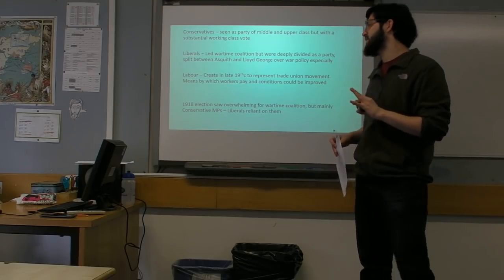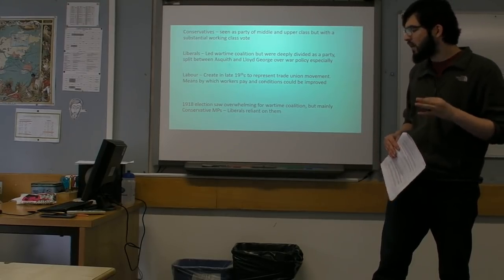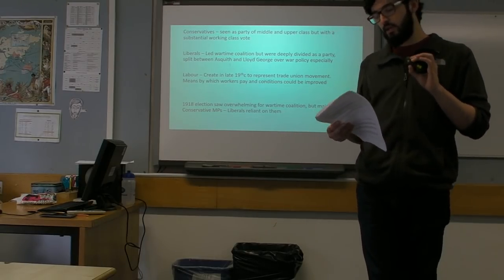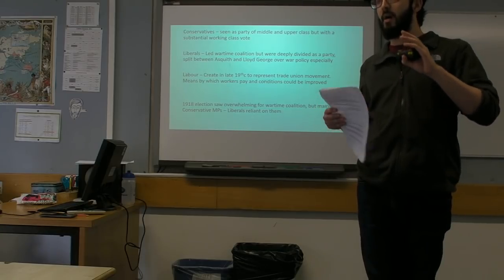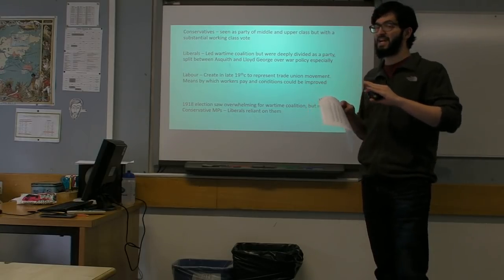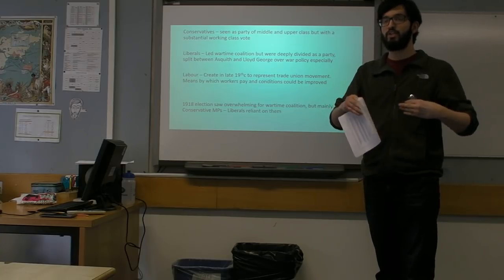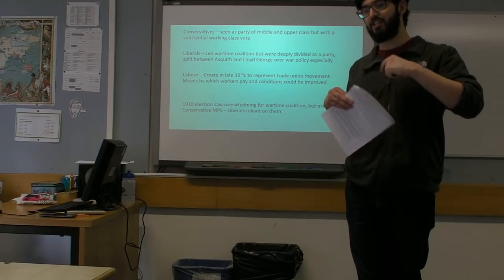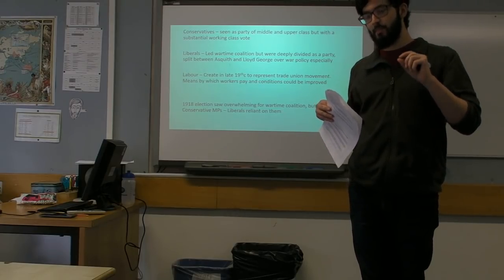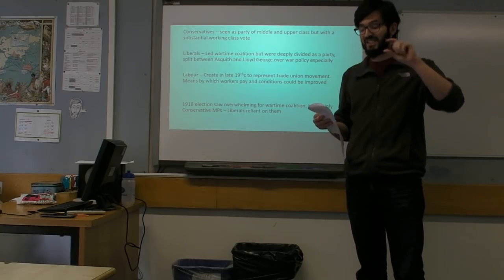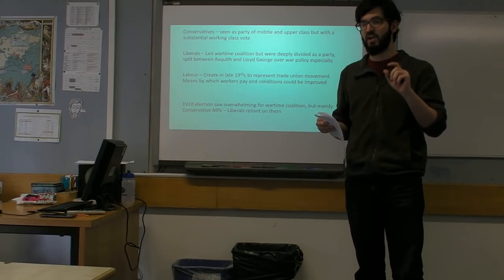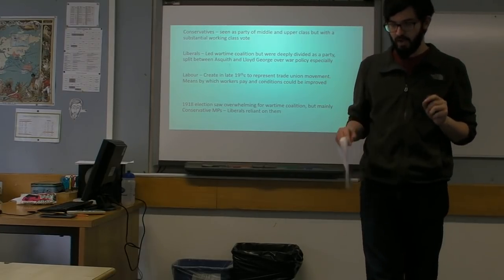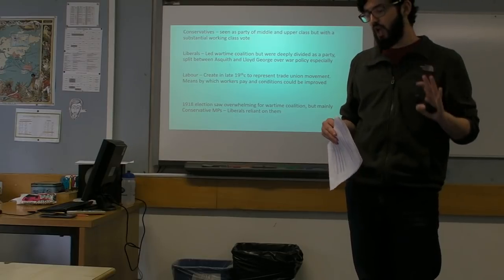In 1918 there was an election and it was basically an overwhelming victory for the wartime coalition. The Liberals and Conservatives go into the election together as a coalition. Even though they win overwhelmingly, most of the MPs elected are Conservative MPs, and so although it is a coalition government with Lloyd George still Prime Minister, it was actually in reality dominated by the Conservatives, who rely on the Liberals for support.